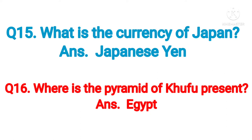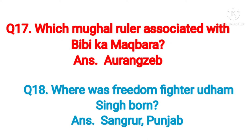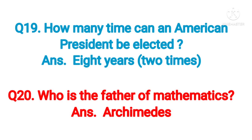Question number sixteen: where is the Pyramid of Khufu present? Answer: Egypt. Question number seventeen: which Mughal ruler is associated with Bibi Ka Maqbara? Answer: Aurangzeb. Question number eighteen: where was freedom fighter Udham Singh born? Answer: Sangrur, Punjab.